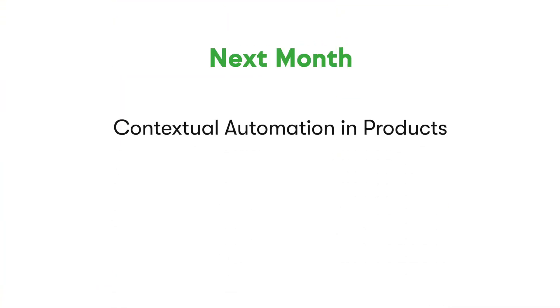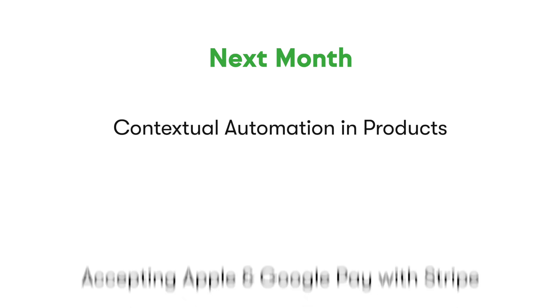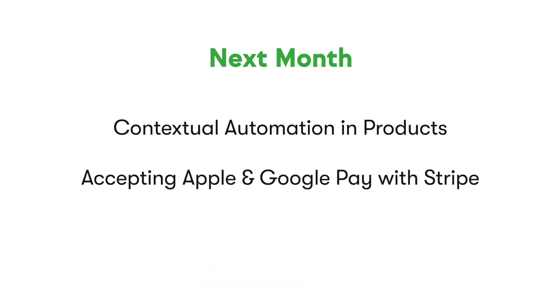Here are a couple of the things we have coming up next month: the ability to set up automations while setting up your products, in addition to the ability to accept both Apple Pay and Google Pay with Stripe on your checkout forms. Join us next month for more details. Until then, keep going, keep serving, and keep growing. Bye!